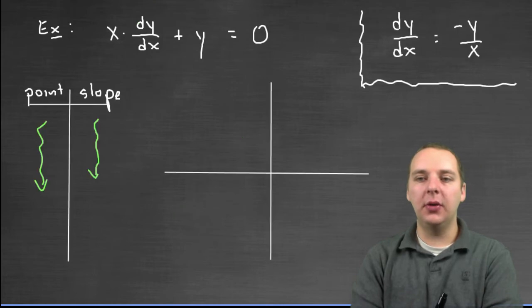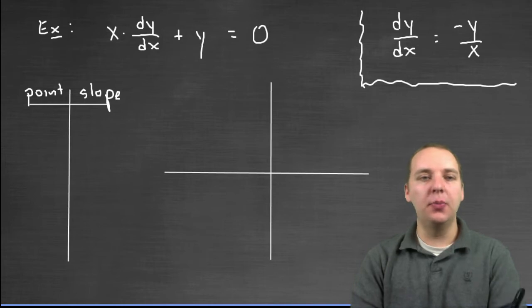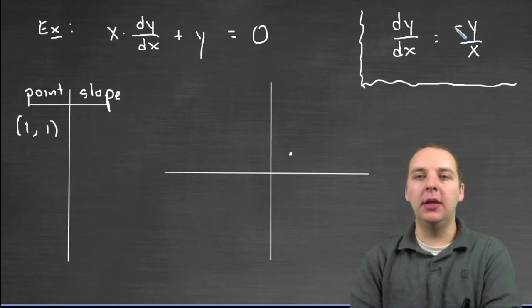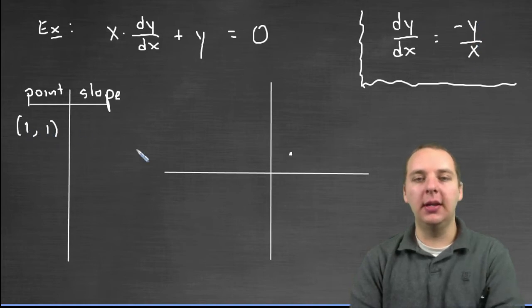There's no real right or wrong way to choose these points. Let's pick the point, in no particular order, how about like (1, 1). So right here at (1, 1), what would the slope need to be? It would be negative 1 over 1, I plugged in y and I plugged in x, so that would be a slope of negative 1.